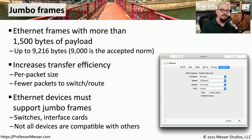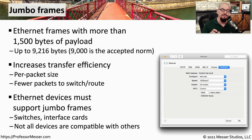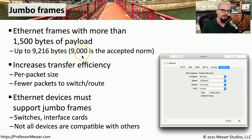An important consideration is that the two end stations and everything in between must support jumbo frames. So any of the switches or routers used must be configured to allow frames of 9,216 bytes, or whatever is the norm on your network.